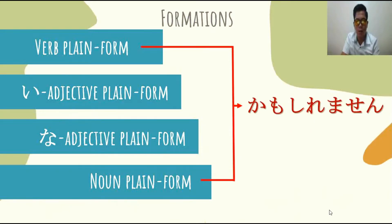Verb plain form — minasang — is yung dictionary form, na i-form at nai-form. For i-adjective, plain form is as-is lang yung 'i'; hindi natin kailangan tanggalin ang 'i'. For na-adjective naman, pag naka-plain form, kailangan tanggalin ang 'na'. As-is lang sa noun. Then plus Kamo Shirimasen.